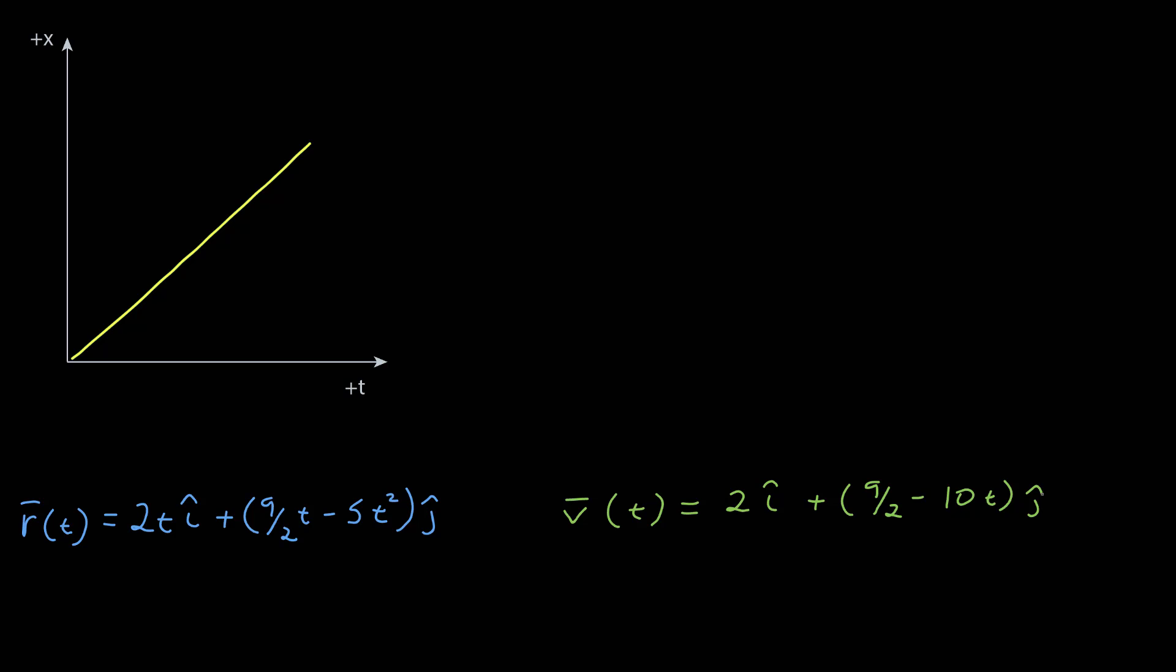Remember how we analyzed graphs when we were doing one-dimensional motion? We can do the same thing with each component of motion in two and three dimensions. For example, here I have the x component of the position as a function of time, which we know is a line, and it's given by 2 times t. And we also know that the slope, which is the same everywhere, since it's a straight line, gives you the magnitude of that component of the velocity, which is just 2.